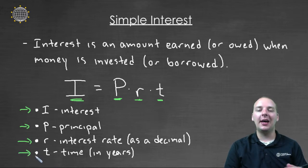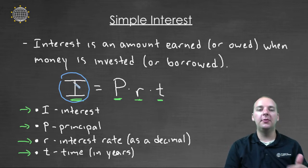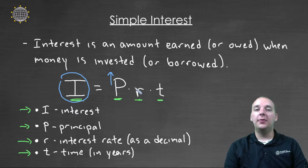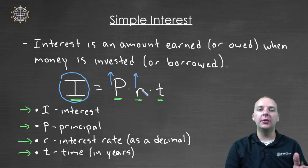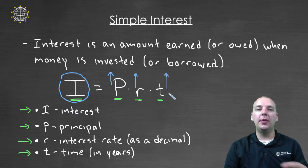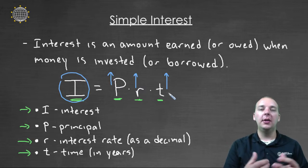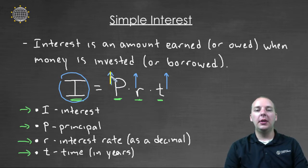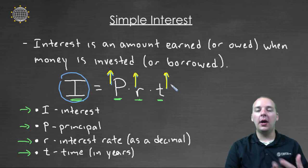T represents time in years. Let's think intuitively about this. If you wanted to make more interest, you could increase your principal — put more money into the savings account or CD. You could find an investment that has a higher interest rate, or you could leave your money in for a longer period of time. People who have retirement accounts where they put in money for 20 or 30 years wind up with a lot of money when they retire. Ideally, you'd look for a combination: more money, a high interest rate, and a long time period.